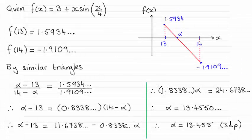Hi there. Now for this question we had to use interval bisection to find a root that lies in the interval 13 to 14. For this equation f(x) equals 3 plus x times the sine of x upon 4.